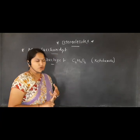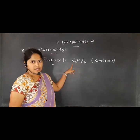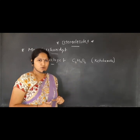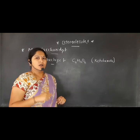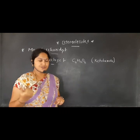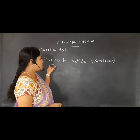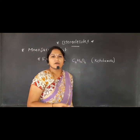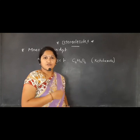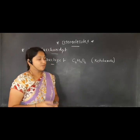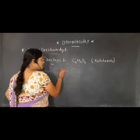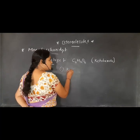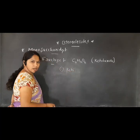Glucose and fructose both have the same molecular formula: C6H12O6. But what is the difference between these two monosaccharides? Glucose is an aldohexose whereas fructose is a ketohexose. That means in glucose we have an aldehyde group, whereas in fructose we have a ketonic group. That is the first major difference.